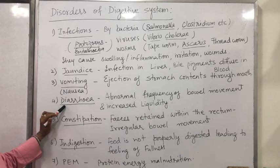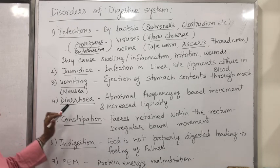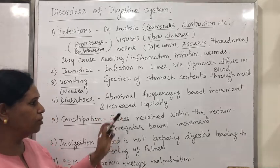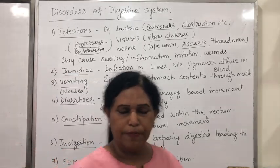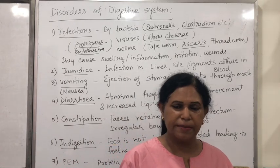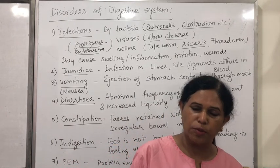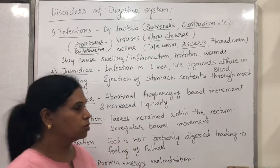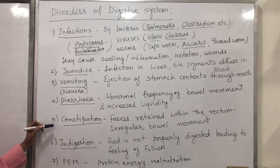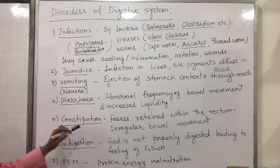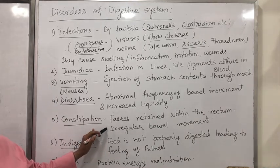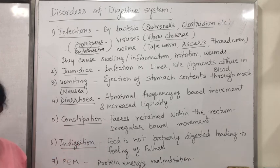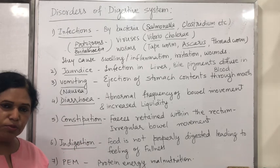Then there is a problem called diarrhea — in layman's language, loose motions. This is the abnormal frequency of bowel movement with increased liquidity of the stools, where water is not absorbed and content is expelled more rapidly. The opposite condition is constipation, where there is irregular bowel movement and feces are retained in the rectum for a longer time, which may lead to problems.